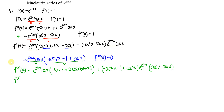Substituting x = 0: the first part equals 1. The term involving negative 3 has sin(0) = 0, so that part vanishes. Similarly negative 3 times x = 0 is 0, so those terms are eliminated. We have negative 1 plus cos(0) = 1, so minus 1 plus 1 = 0, and the right-hand terms drop out. Left with 1 times negative 3, giving f''''(0) = -3.